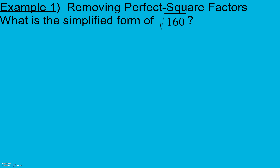In example 1, we're going to simplify by getting rid of any perfect square factors. The first thing I'm going to do is a factor tree. We can factor 160 down in a lot of ways — I'm going to use 16 and 10. It doesn't matter what we use as long as it multiplies to 160. We're looking for prime factors, so this is a prime factorization using a factor tree.